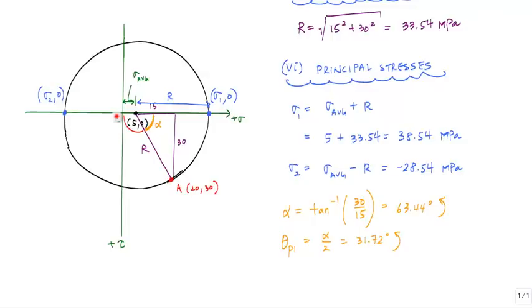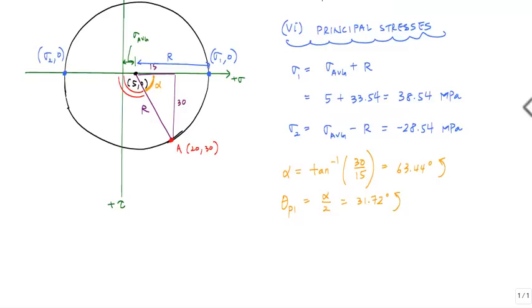Theta P2 is associated with this angle or half that angle. If I call this one beta, beta would be 180 minus alpha, which is 116.56 degrees. In this case, you would be going clockwise from point A or this reference A where theta equals 0. Theta P2, the angle associated with the minor principal stress sigma 2, is 116.56 divided by 2, which is 58.28 degrees clockwise.